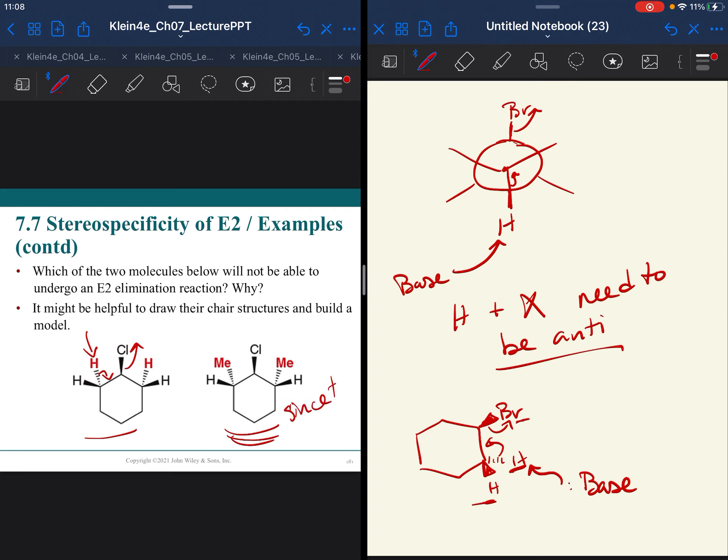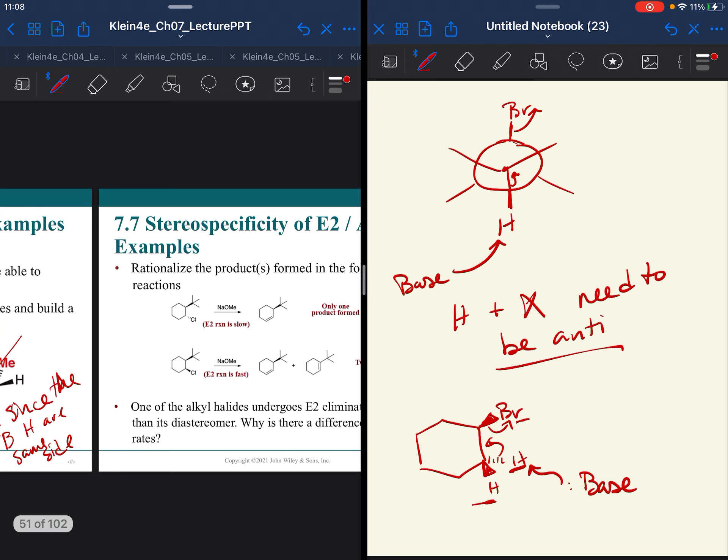Since the beta hydrogens are wedged and so is the chlorine, so since they are on the same side, they can't be anti to the chlorine, so they will not undergo E2 elimination. So only this one can if we're comparing these two on this slide.